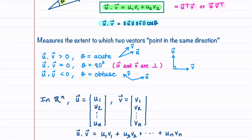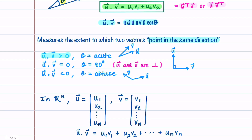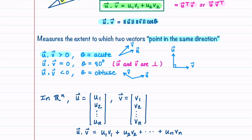The dot product measures the extent to which two vectors point in the same direction. If the dot product is positive, cosine of theta is positive and theta is an acute angle — in this case the two vectors u and v point in a similar direction. If the dot product is equal to zero then theta is 90 degrees and our two vectors u and v are perpendicular. If the dot product is negative, theta is an obtuse angle and our vectors u and v point in very different directions.